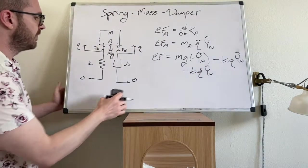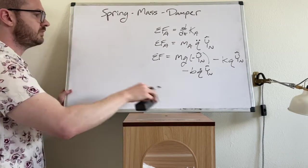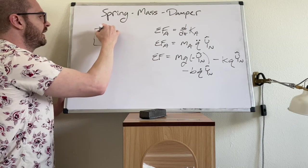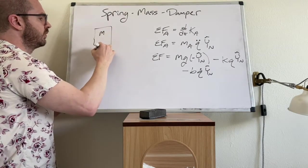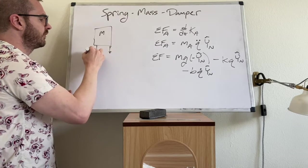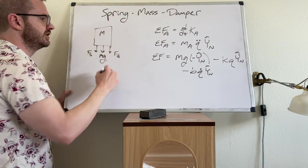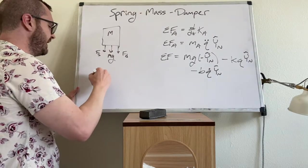So we can clean this up a little bit now. And I'm gonna put the free body diagram of the block back up here. So this is M and we had spring force pointing down. We had damper force pointing down. We had M times G.